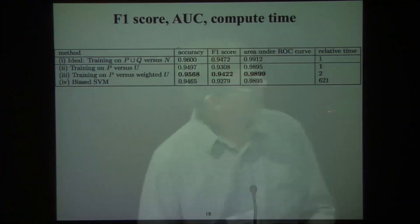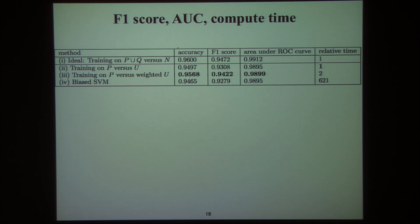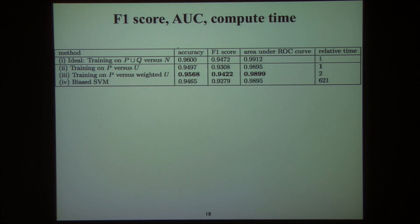Here are the numerical results. Our second method proposed in this paper — based on the lemma — is slightly better on all measures of performance. Maybe the last column is the most interesting, because our methods are based on learning a classifier that distinguishes labeled from unlabeled and then doing a transformation, so that's very fast — you just have to learn one classifier. The biased SVM method is based on an almost brute-force search, training many different support vector machines and using a heuristic to guess which one will do best. The biased SVM requires training 621 classifiers compared to just one or two classifiers for our method.